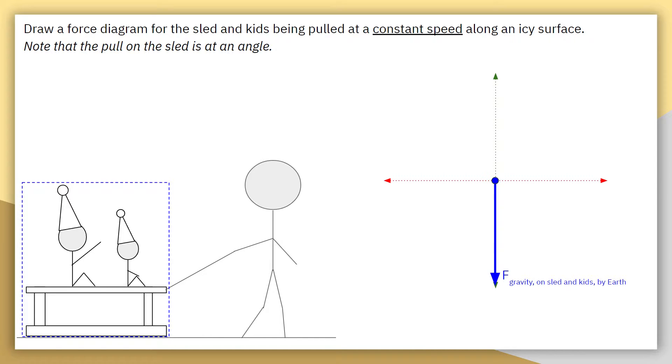The first force that I like to draw on a free-body diagram is the force of gravity. In this case, it's the force of gravity acting on the sled and the kids by the Earth. It's pointing straight down, pointing at the center of the Earth.